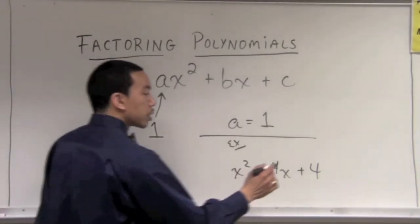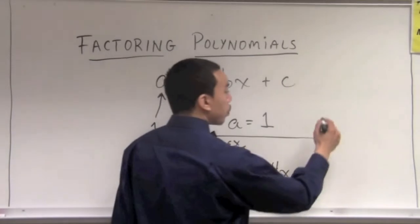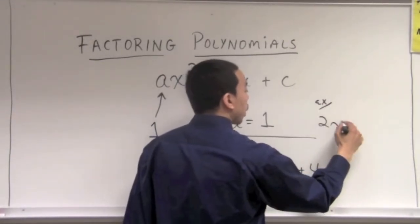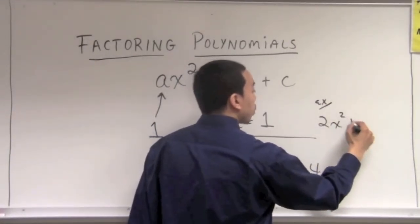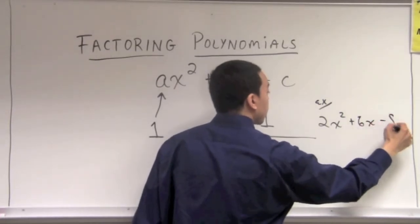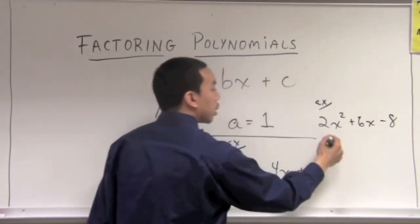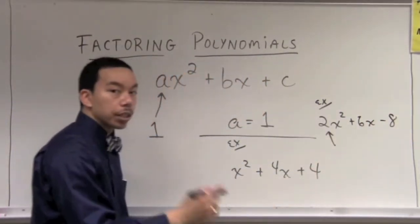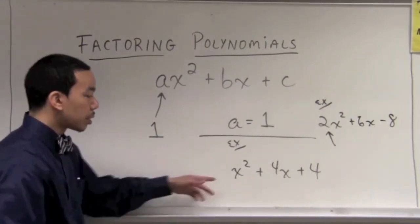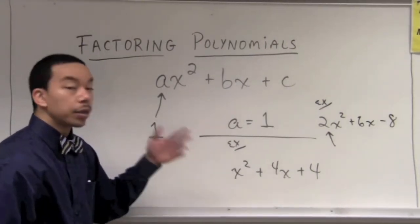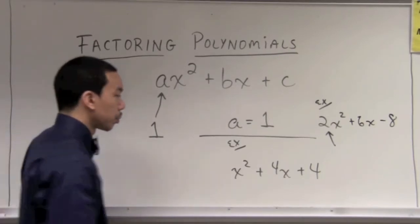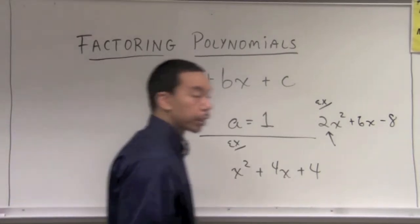However, if we were to see something in the form of 2x squared plus 6x minus 8, that leading coefficient is not a 1. If it's anything besides a 1, then we cannot use this method that I'm about to teach you. So let's begin.